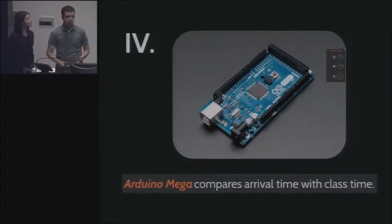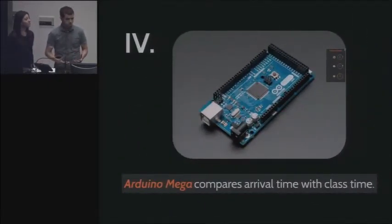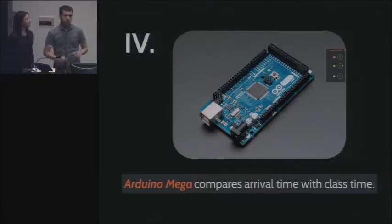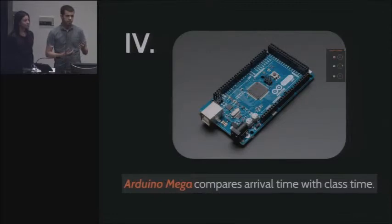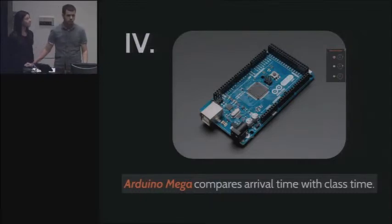Most important of all is the Arduino Mega. The Arduino Mega is the central hub of our project. It's going to hold all the components together and communicate between them. It's going to decide whether or not the student was late, based on the information on the SD card and the real-time clock, by comparing the times.